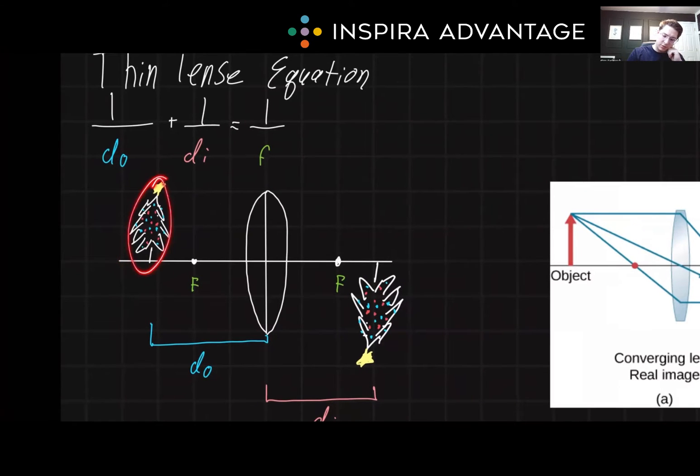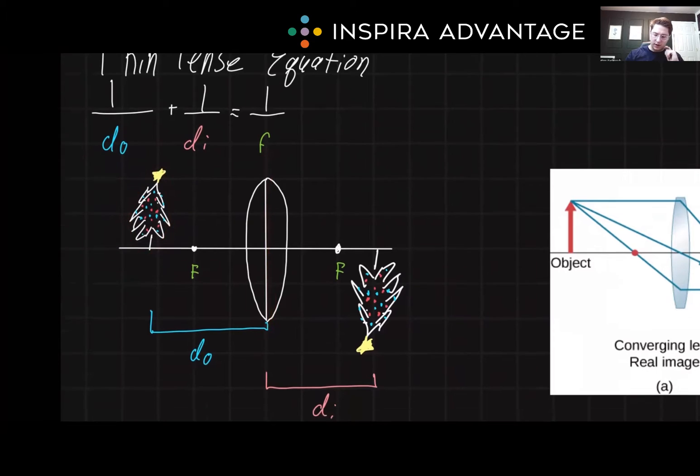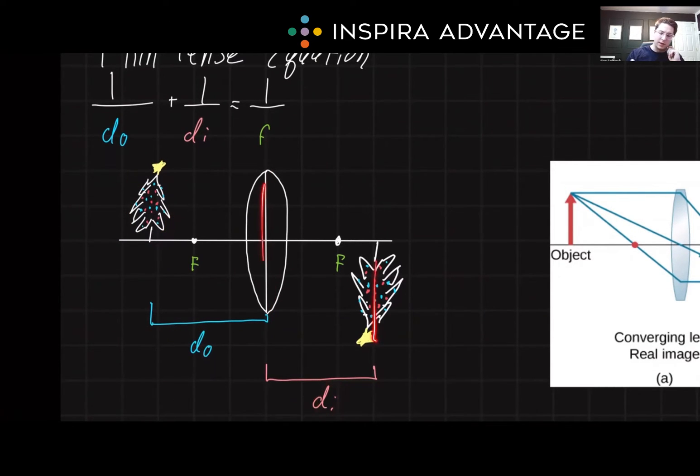DI is the distance the image is from the lens. And I didn't draw the Christmas tree upside down just to be quirky. This is literally what is going to happen with a convex lens. But it won't always happen with a convex lens. It depends on where it is with relation to these focal points, as we'll see in just a moment.